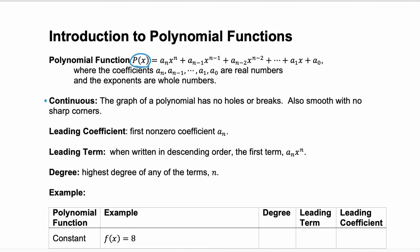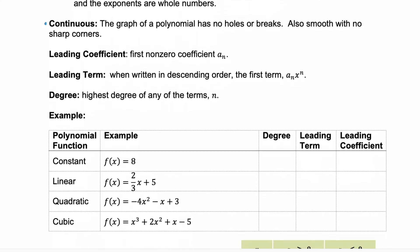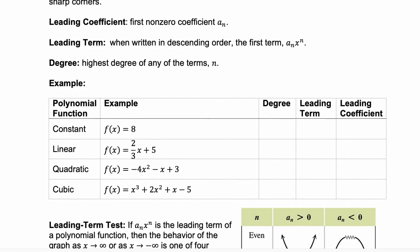Now, let's talk about some of the terminology you're going to need when we talk about polynomial functions. First, you have the leading coefficient. This is your first non-zero coefficient, a_n.